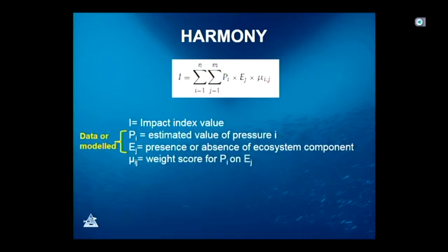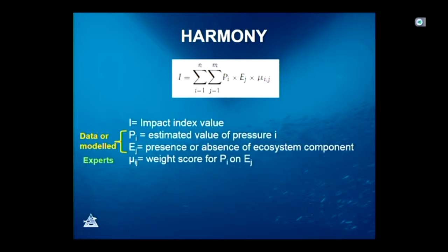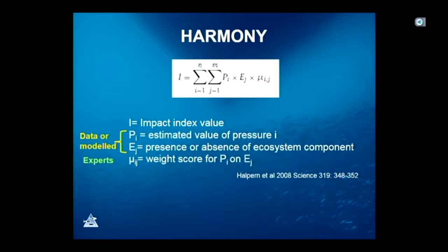The pressure and ecosystem component values come from data or models, while the weight scores are done by expert evaluations — experts are asked to score how serious the impact of a given pressure is on a given component of the ecosystem. This equation was originally published by Benjamin Halpern in his paper in Science on the impact on the world ocean by anthropogenic activities and the variation in impact across all world oceans. All these systems are actually building on that paper by Halpern.